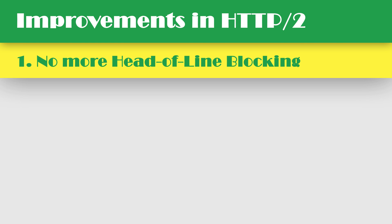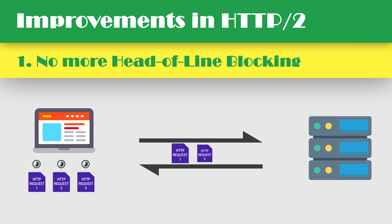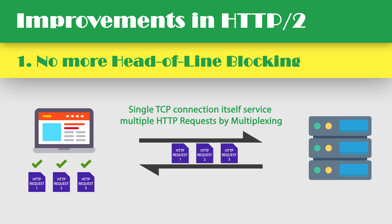In HTTP 2, the blocking time is totally reduced. It is achieved by using the same TCP connection efficiently for all the requests with the help of multiplexing.